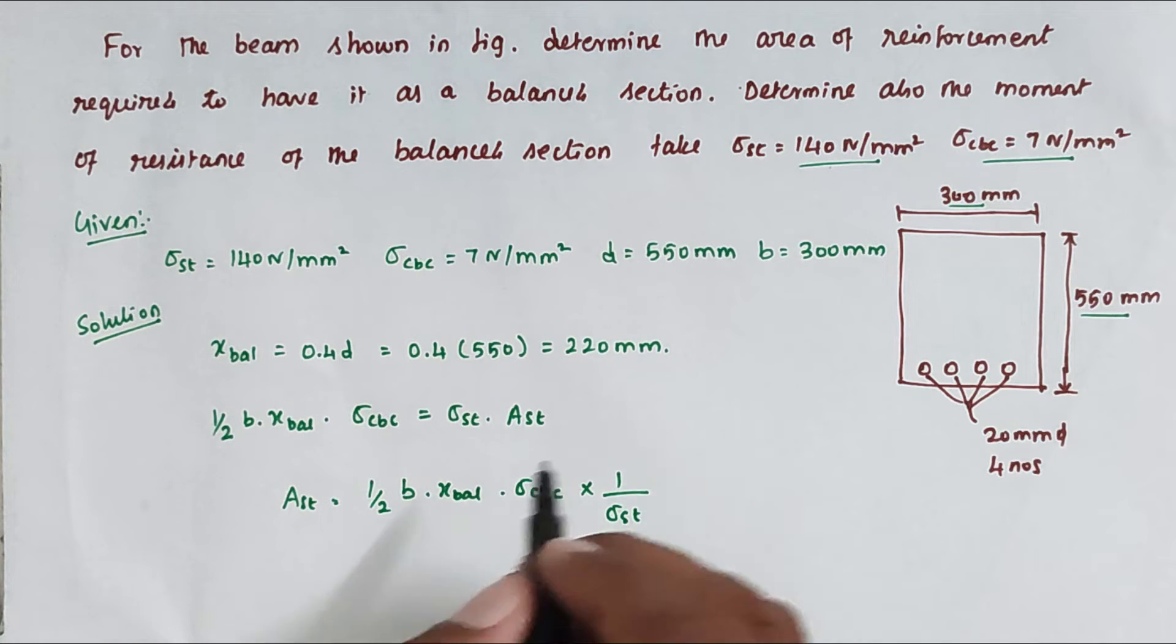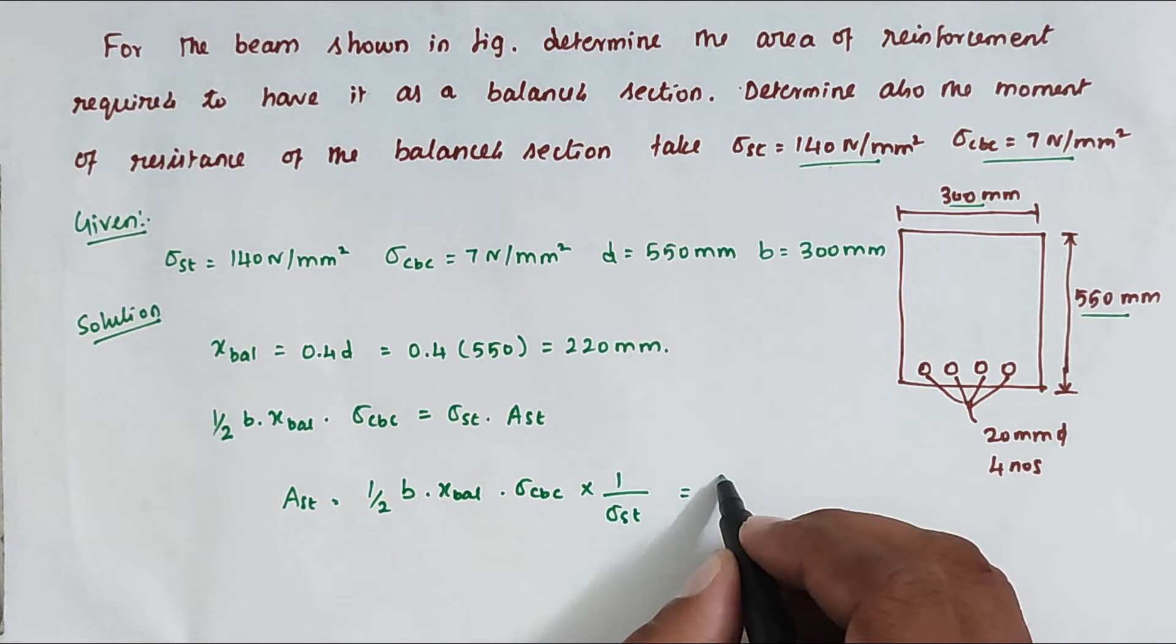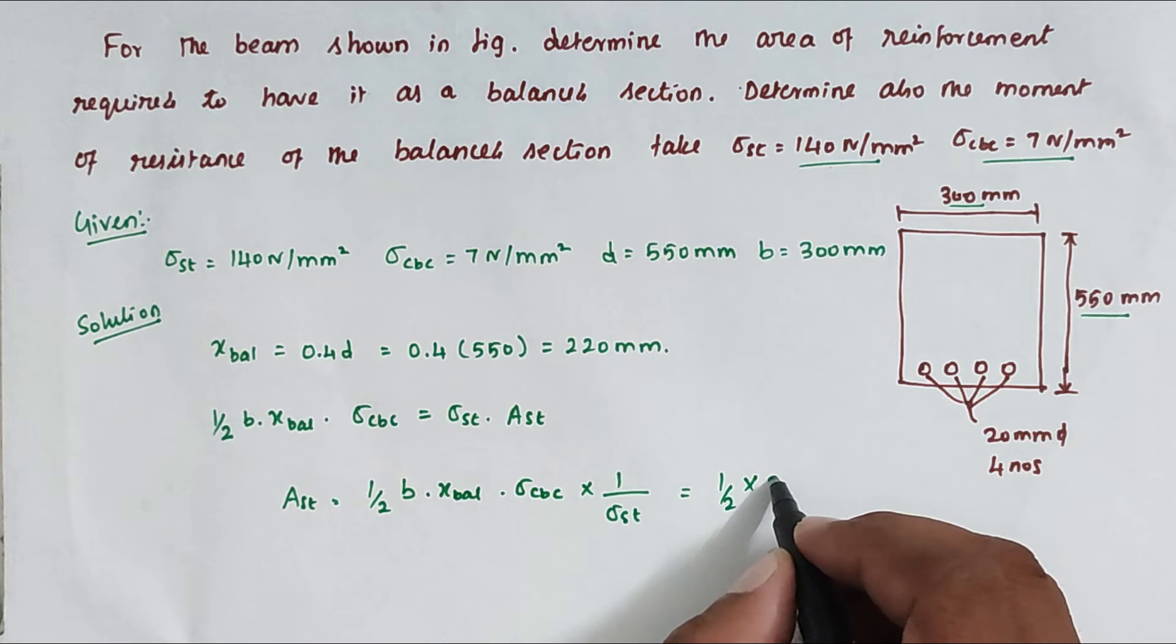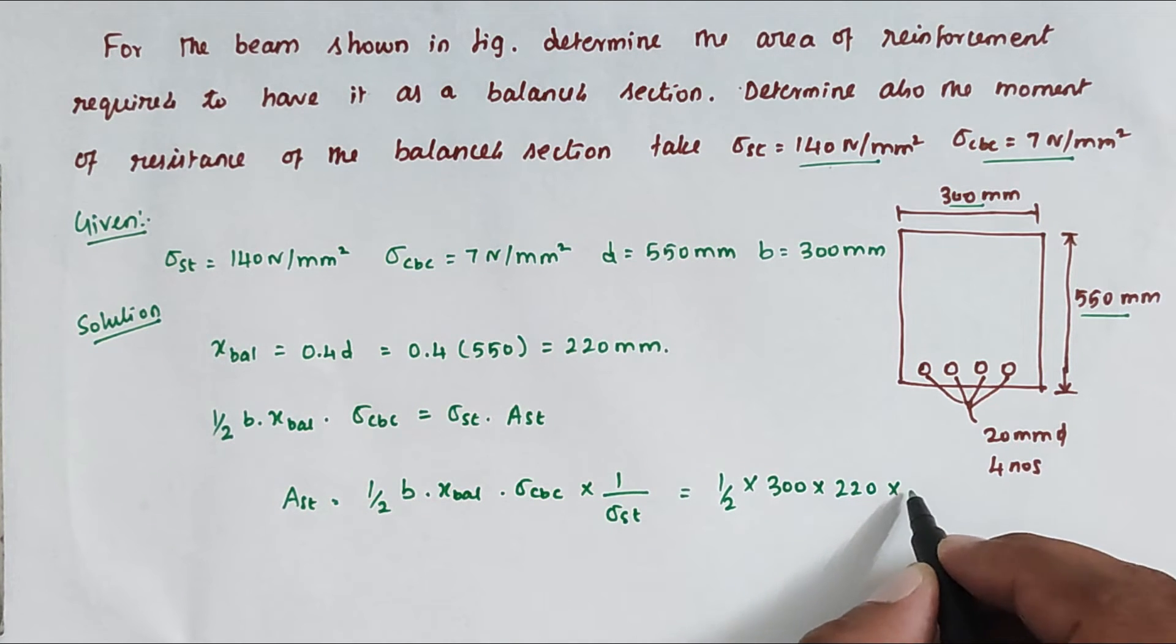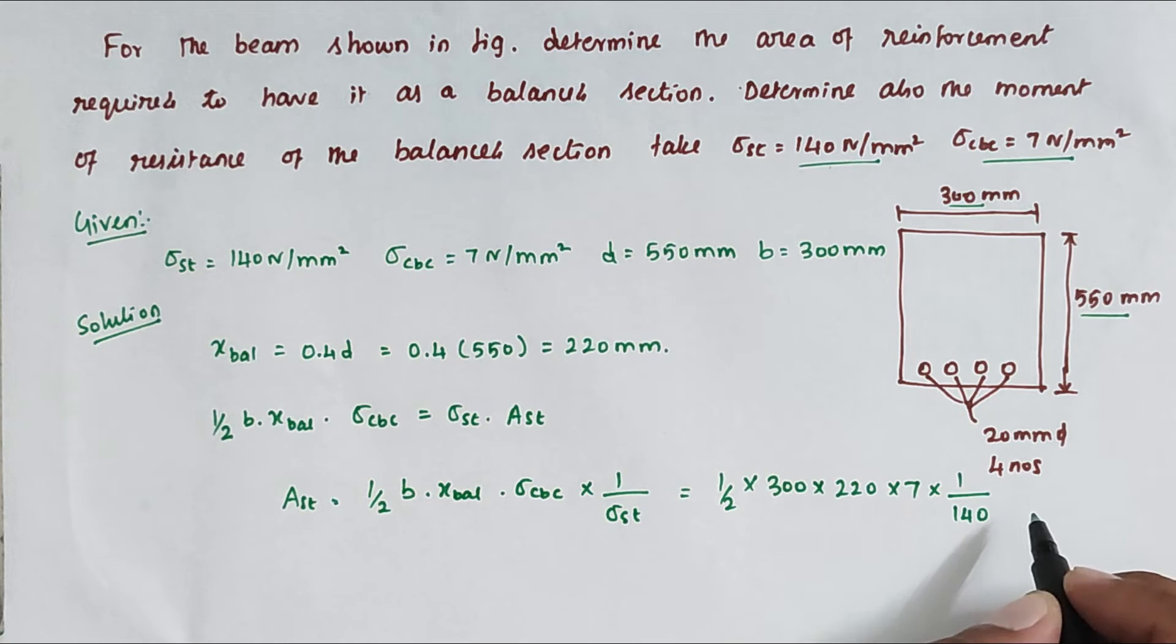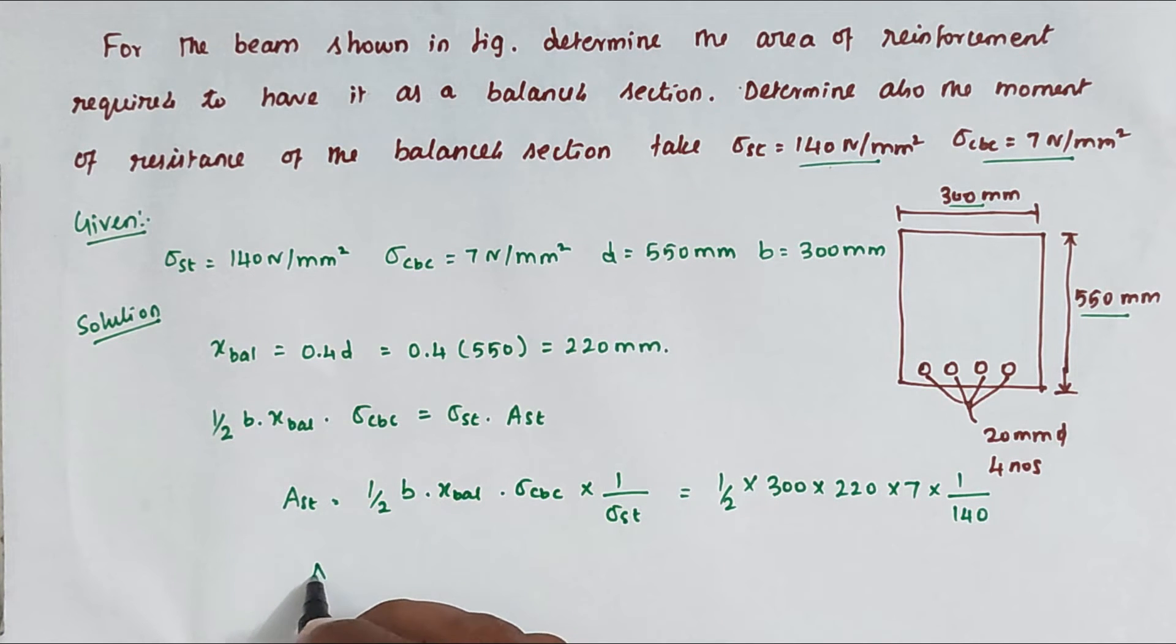So now ½ × B value 300 × X_bal 220 × σ_CBC 7 × 1/σ_ST 140. Solving this, the A_ST value is 1650 mm². So this is the A_ST value.